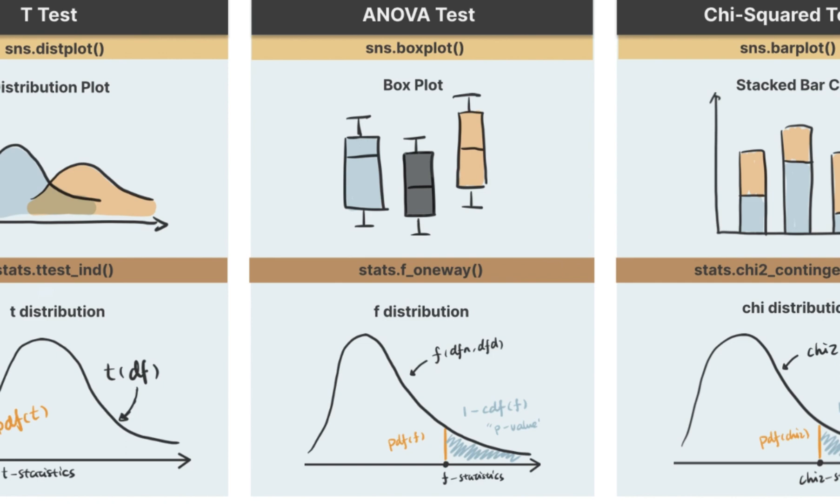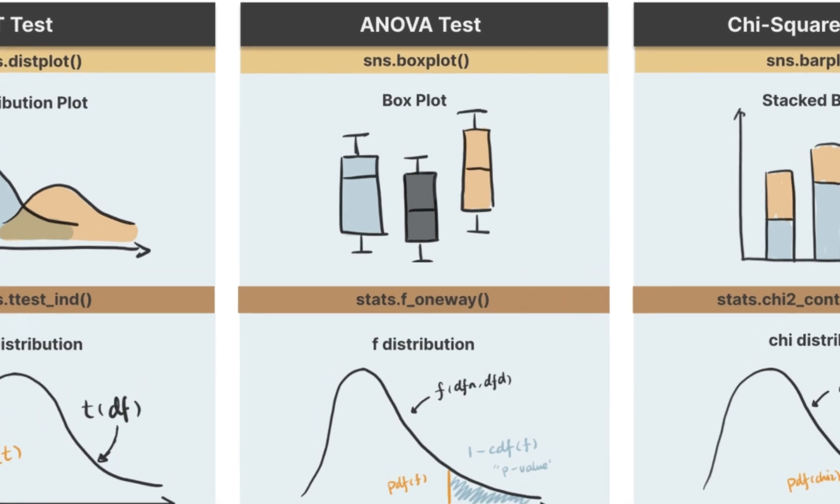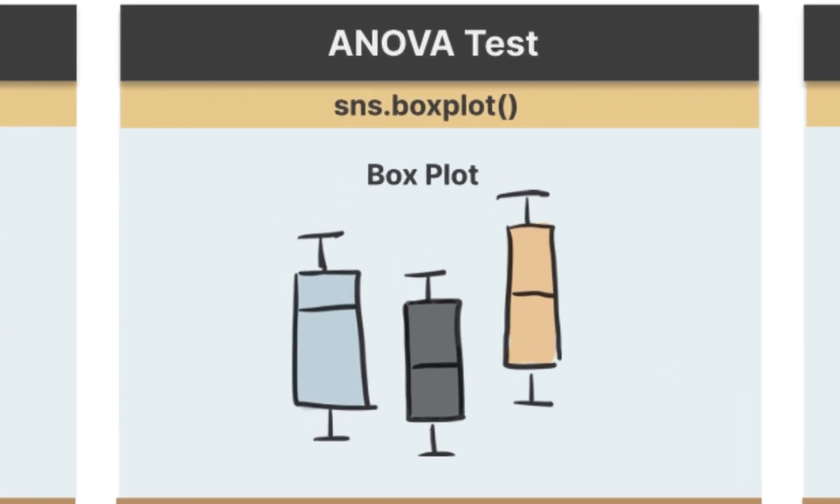Null hypothesis in ANOVA is that no difference among three groups. Alternative hypothesis is that there is difference between at least two of them. I found BoxPlot to be the most aligned visual representation of ANOVA test.